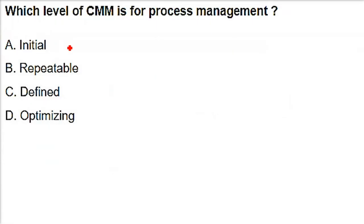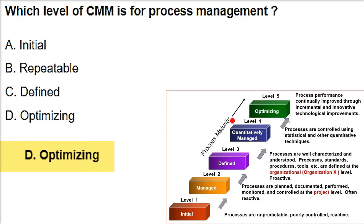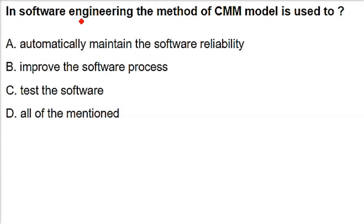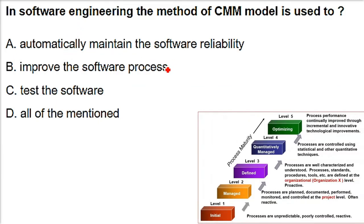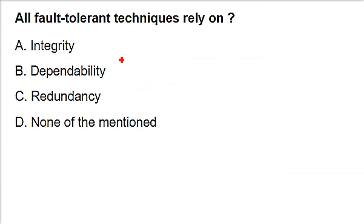Which level of CMM is for process management? Level 5, which is the Optimizing level, is the top-most level. At this level, the focus is on continuously improving process performance through incremental and innovative technological improvements in software engineering. The CMM or CMMI model is used to improve software processes - regardless of which development model you use (waterfall, spiral, agile), you need to improve those processes and track which maturity level they are at.